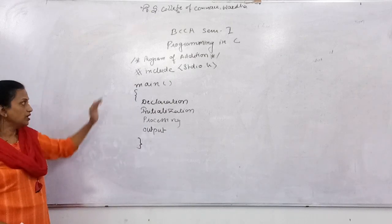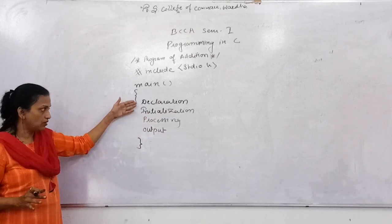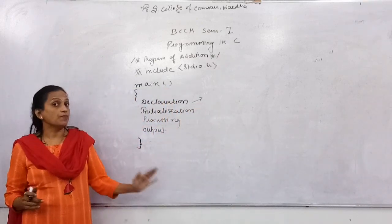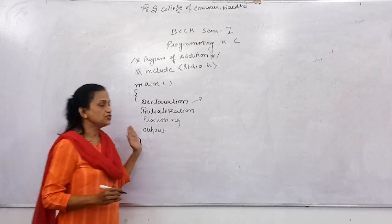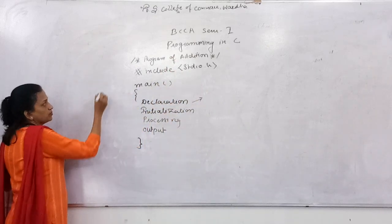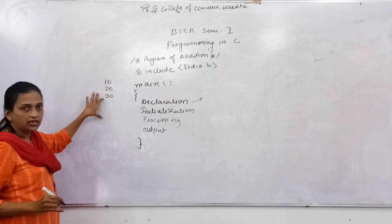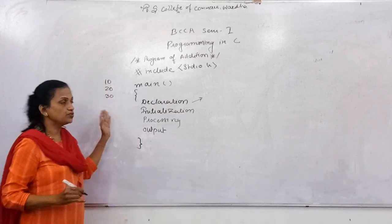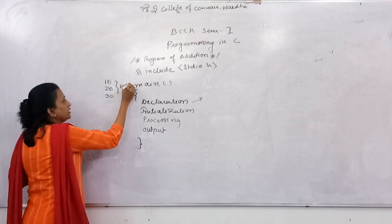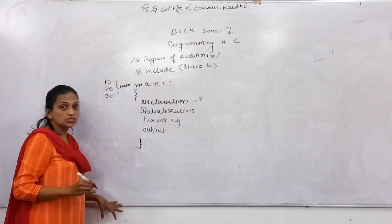What do you mean by declaration? Declaration is nothing but the declaration of a variable. For addition, if you want to do the addition of three numbers — suppose 10, 20, and 30 — these numbers are your data. The data needs to be stored somewhere in a memory location before it is used in your program. You cannot store it directly; first you have to occupy some space in the memory location.